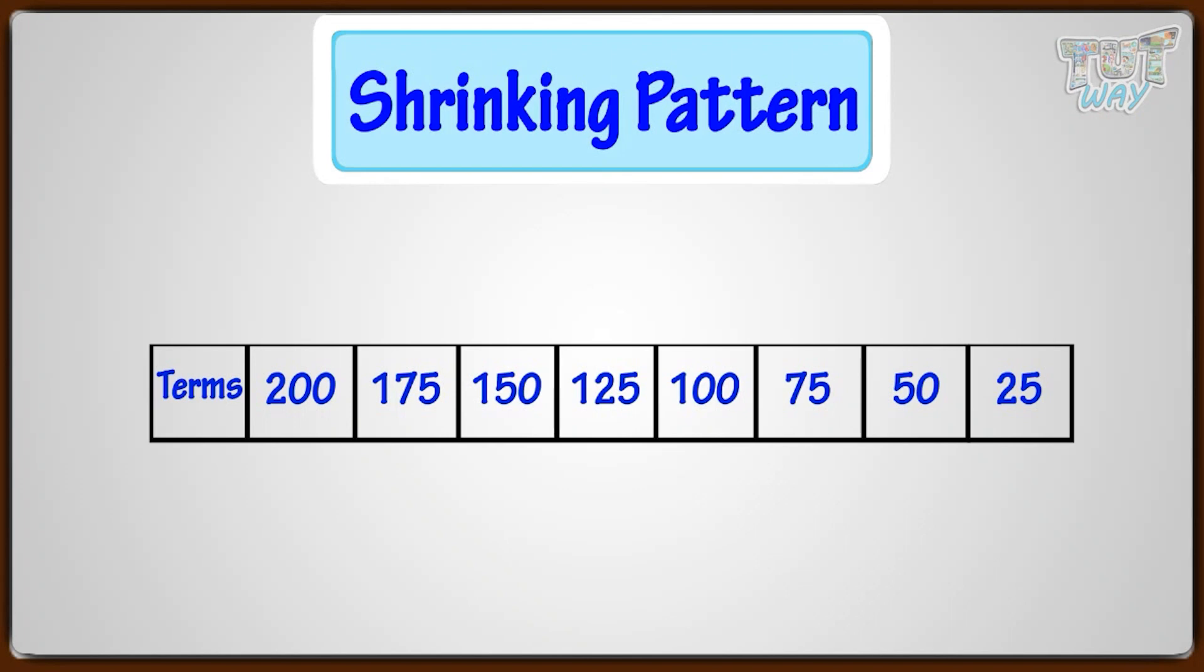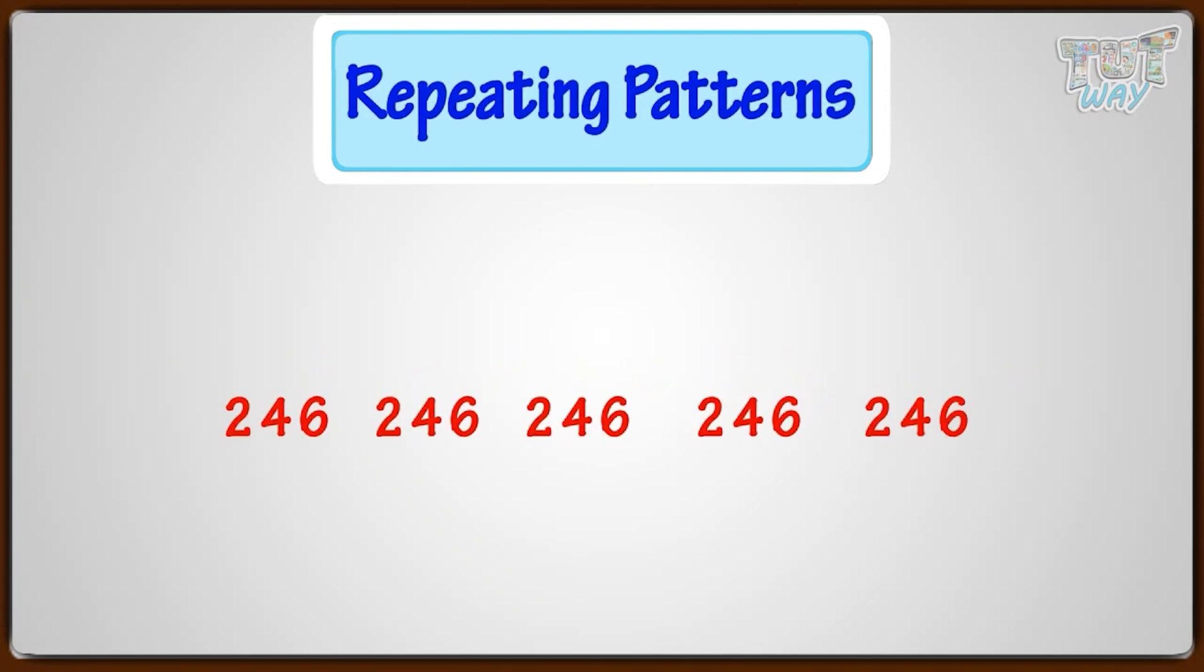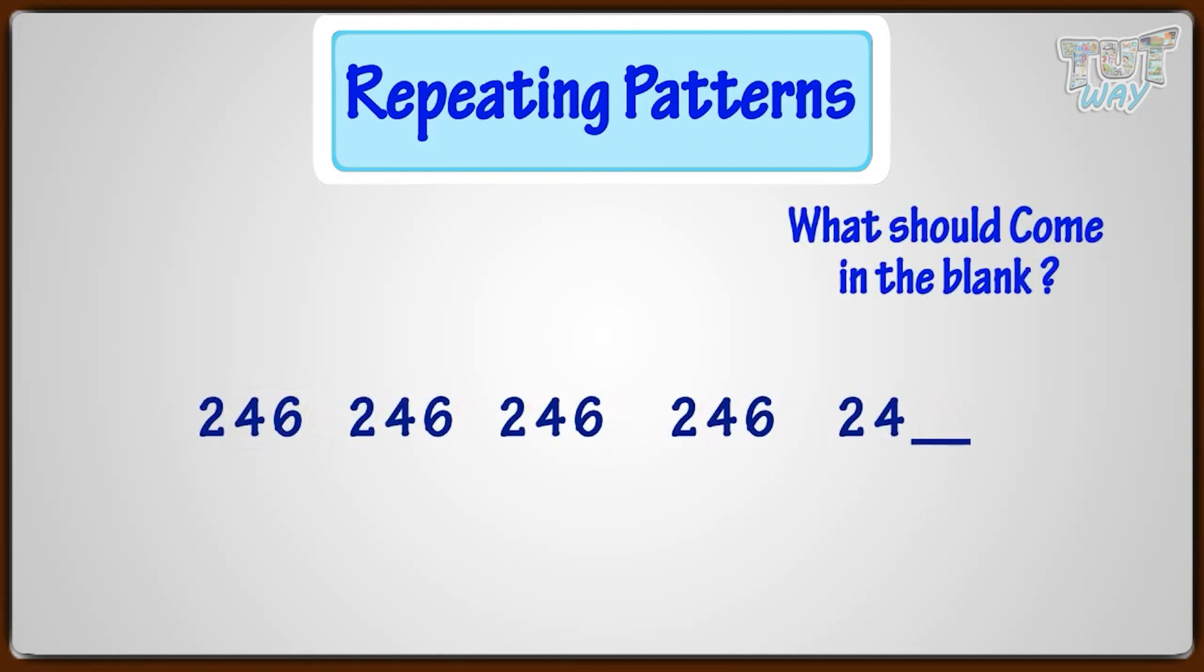Let's have a look at some other type of patterns. They are repeating patterns. Here the numbers 2, 4, 6 are getting repeated, so it's a repeating pattern. As the numbers 2, 4, 6 are repeating, what should come in the blank space?